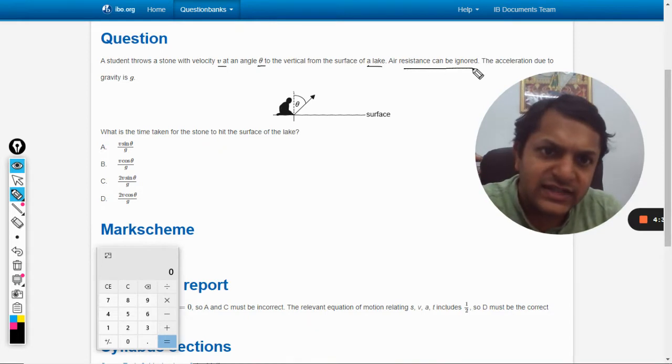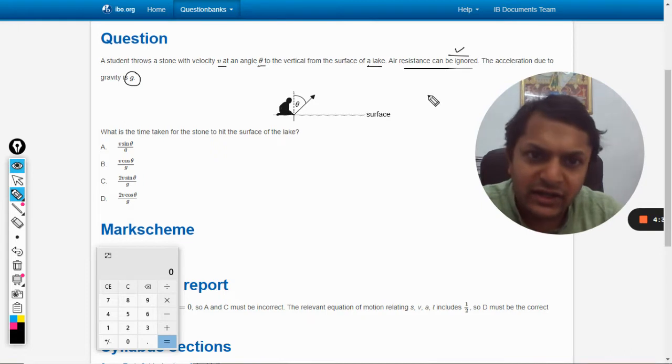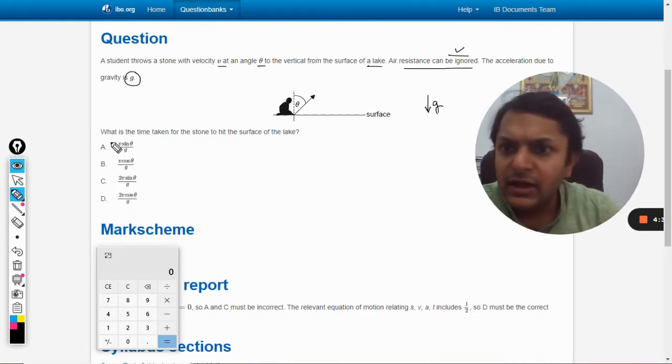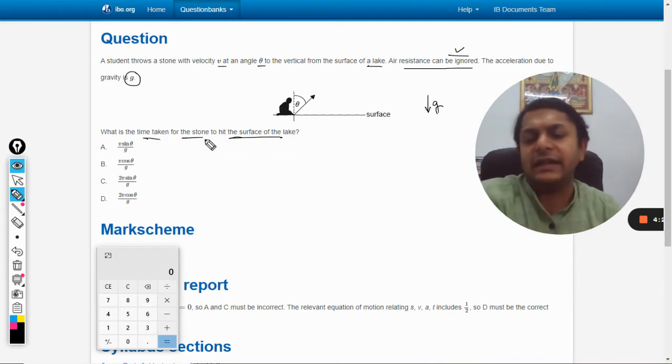Air resistance can be ignored. Very good. The acceleration due to gravity is g, which will be vertical. What is the time taken for the stone to hit the surface of the lake? So we need to find the time taken.